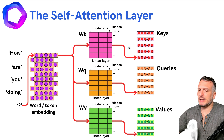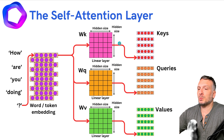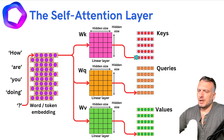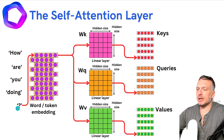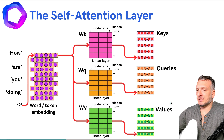The size of the keys, queries, and values comes from the choice we made in the number of output features in the different linear layers. What I demonstrated so far looked like an iterative process, but in reality everything is happening in parallel. We can inject the whole input sequence as a tensor, get a tensor output from the embedding, and get tensor outputs from the different linear layers. Nothing is iterative — everything happens at the same time.